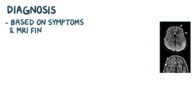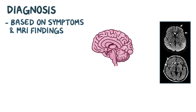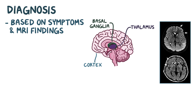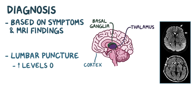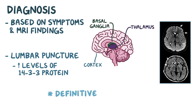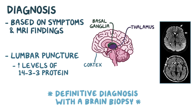Spongiform encephalopathy is diagnosed based on symptoms and MRI findings, which include lesions in the cortex, basal ganglia, and thalamus. A lumbar puncture can also be done to get cerebrospinal fluid, which might show elevated levels of 14-3-3 protein — a sign of significant neuronal destruction. Ultimately, the definitive diagnosis of spongiform encephalopathy is done with a brain biopsy, which is typically done after a person dies.